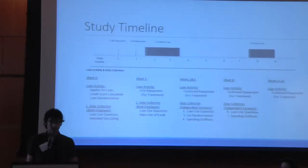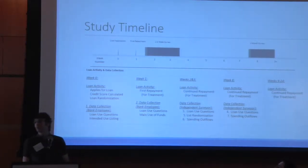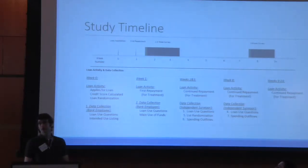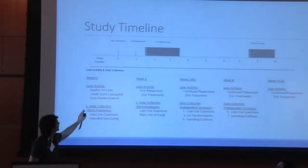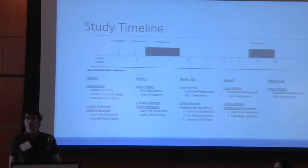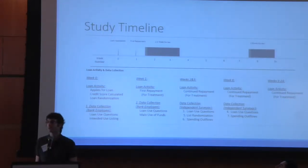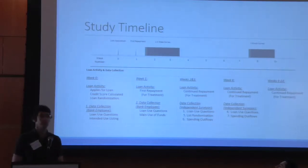I'll start by giving you an overview of the different methods. We start by asking direct questions: what do you plan to do with the money? In particular, do you plan to use this loan for any household expense or for paying down other debt? We ask those questions on the bank application, and then a week after loan disbursement we ask the same questions about what you did or plan to do with loan proceeds when the loan officer makes his or her first visit to collect the first payment.